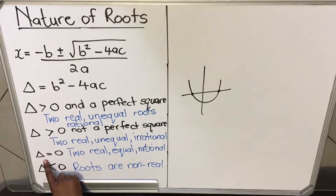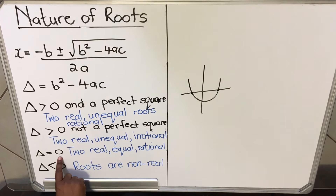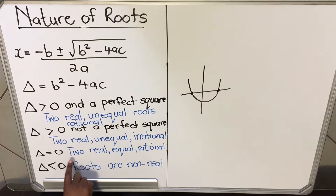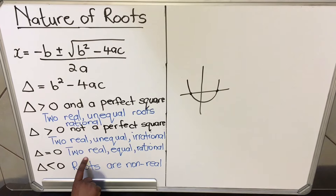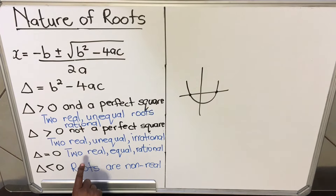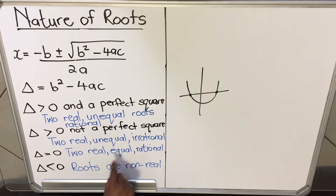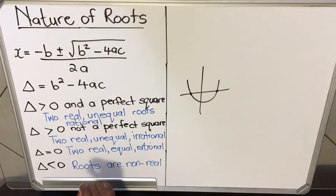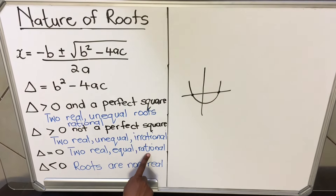When delta equals zero, you will have two real roots but they will be equal — for example, 3 and 3, or 7 and 7 — and they will be rational.